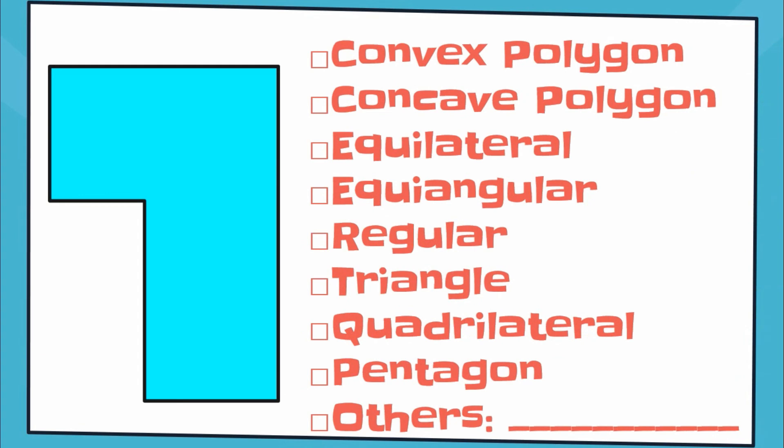Next, we have this figure. Take a look at it. It's also a polygon. What kind of polygon is it? Is it convex or concave? That's concave. Is it equilateral? No. Equiangular? No. Regular? No. Is it a triangle with three sides? No. Let's count how many sides it has: one, two, three, four, five, six. It has six sides, so therefore that's a hexagon.